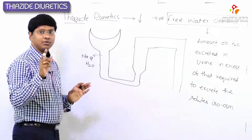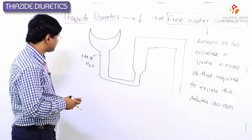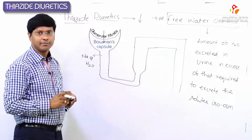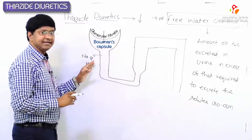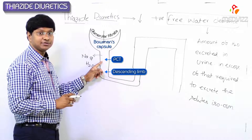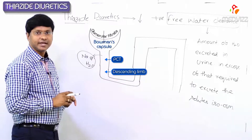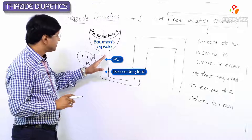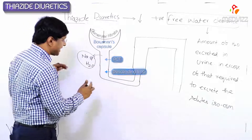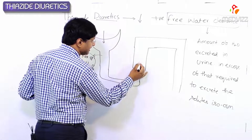If you take the nephron, the glomerular filtrate comes into the Bowman's capsule, and at the level of the proximal convoluted tubule, sodium and water are being reabsorbed.